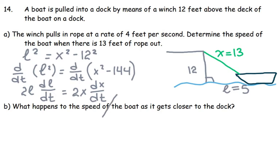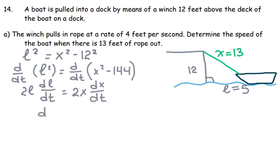So if I continue the work, dL over dt is the velocity at which the boat is going to be moving, so that's dL over dt. And then if I divide both sides by 2, I will have X over L, and then I have dX over dt.